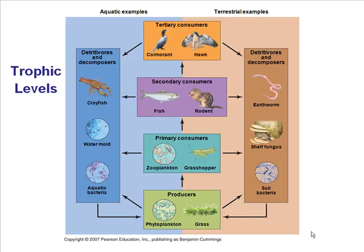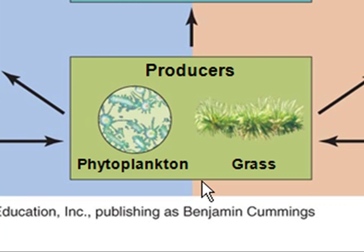In ecosystems, energy passes among trophic levels. As organisms feed on one another, matter and energy move through the community from one rank in the feeding hierarchy, or trophic level, to another. Producers are at the base of the food chain — these are the photosynthetic organisms, often called autotrophs or self-feeders. They comprise the first trophic level.